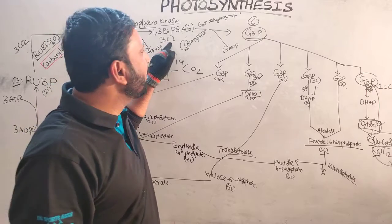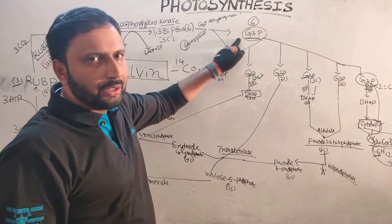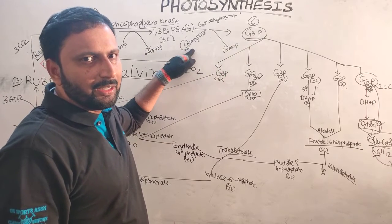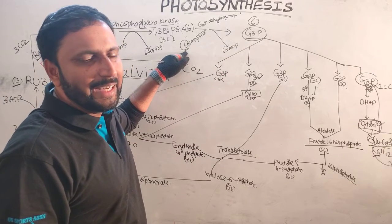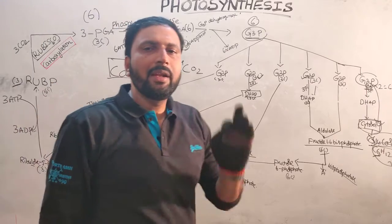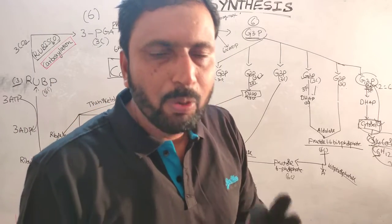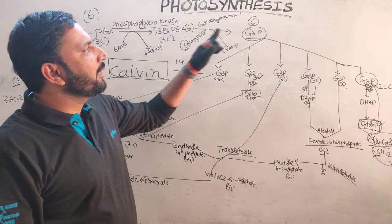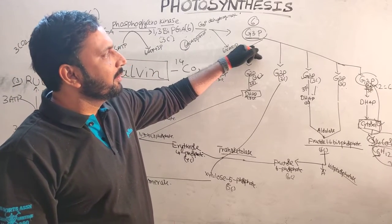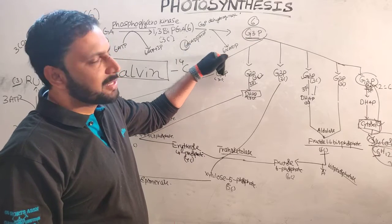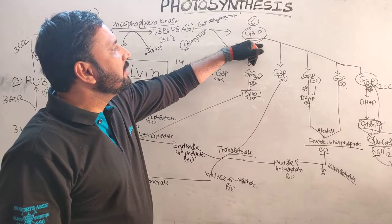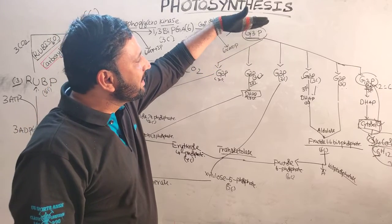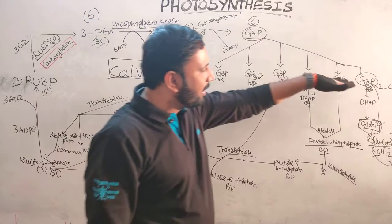Six molecules of 1,3-bisPGA undergo reduction to form six molecules of glyceraldehyde-3-phosphate (G3P). The hydrogen donor is NADPH2, which is also a product of the light reaction. So six NADPH2s are required; six NADPH2s are converted into six NADP. Like that, six G3Ps are formed.